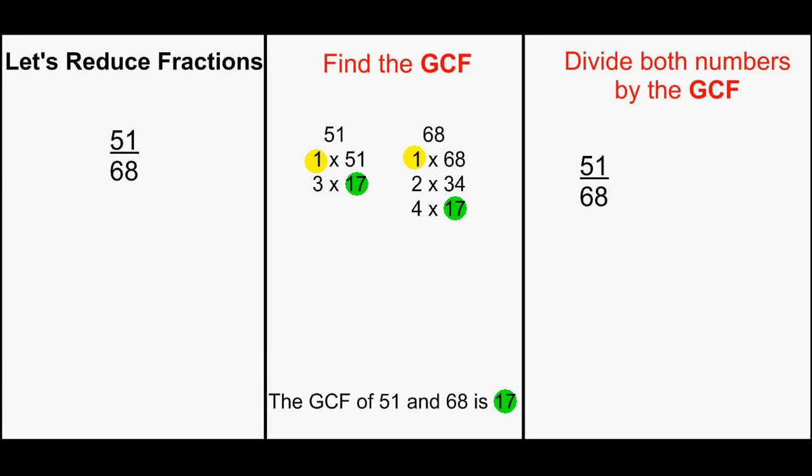Now, divide both numbers by the greatest common factor. 51 divided by 17 is 3. 68 divided by 17 is 4. So our fraction 51 68ths in reduced form equals 3 fourths.